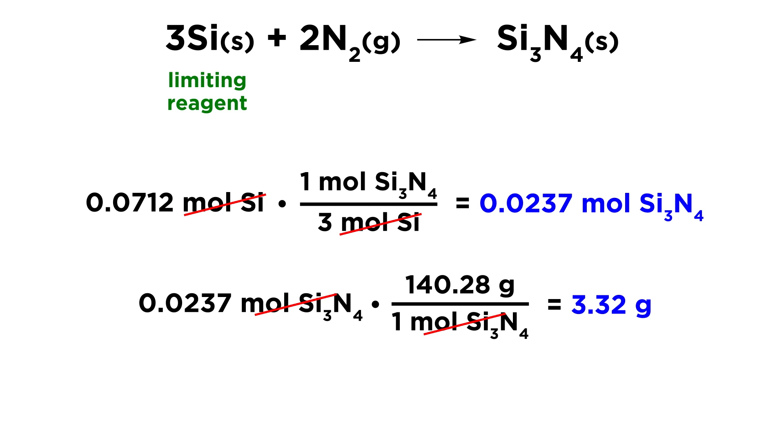And lastly, we wanted to know what the percent yield would be if we only got a 2.89 gram actual yield. So remember, percent yield is actual yield over theoretical yield times 100, expressed as a percentage. So we got 2.89 grams divided by 3.32 grams, which is the maximum that we could possibly get, times 100, that is an 87.0 percent yield.